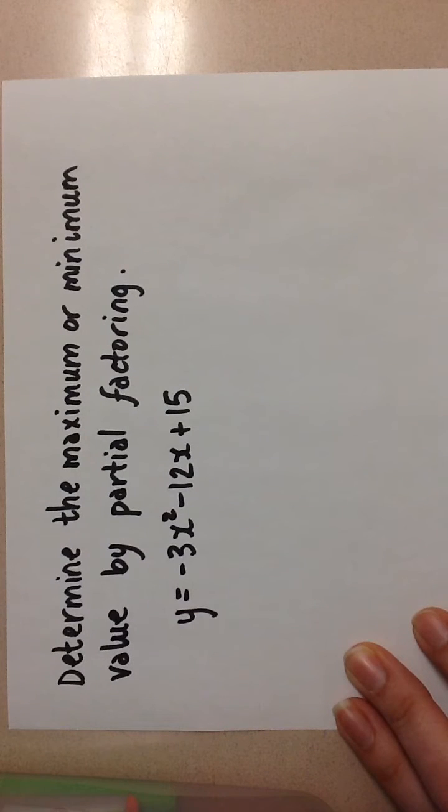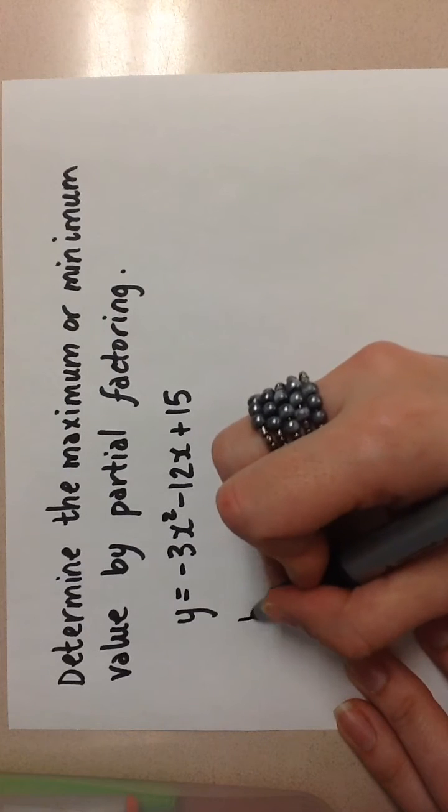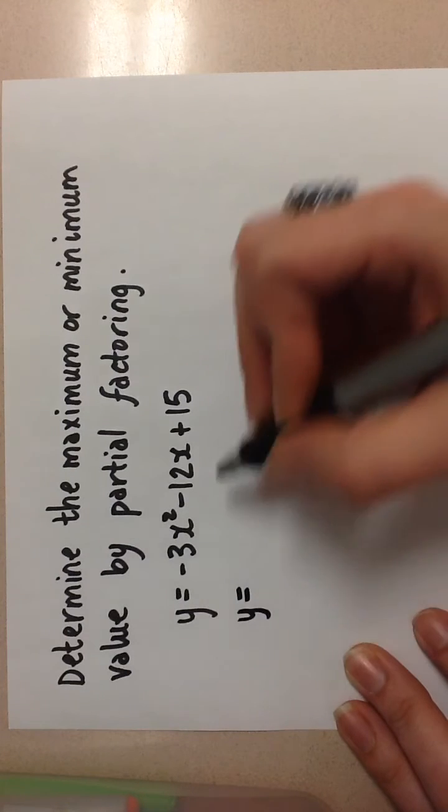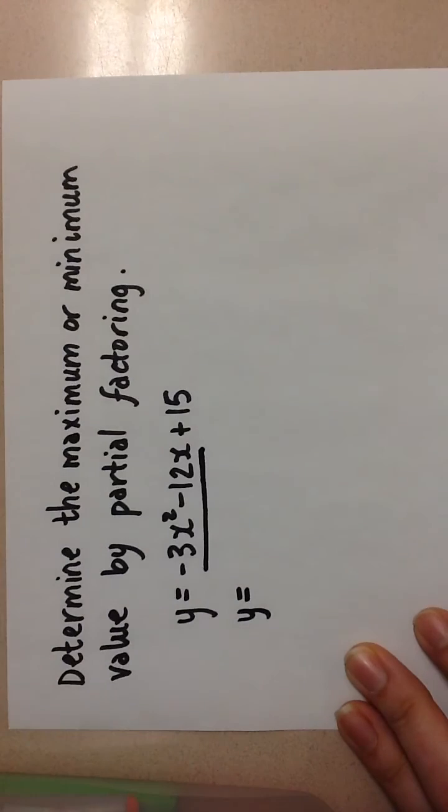Here we're going to find the maximum or minimum of this quadratic equation by using partial factoring. To partial factor, we need to take a common factor out of the first two terms of the equation only.